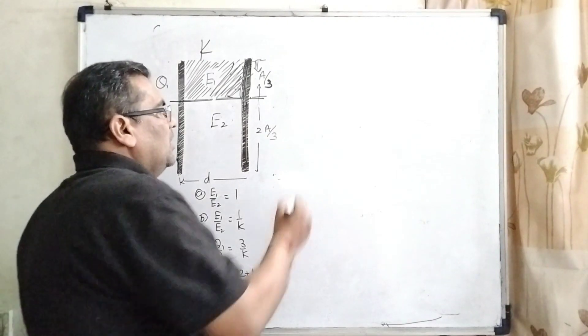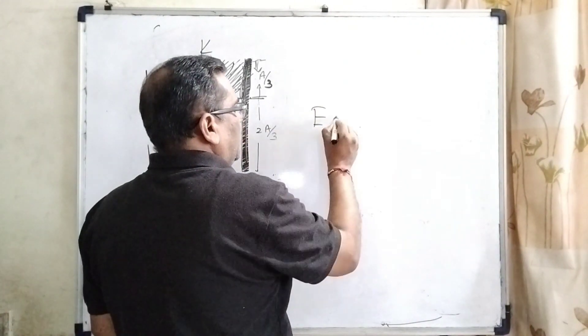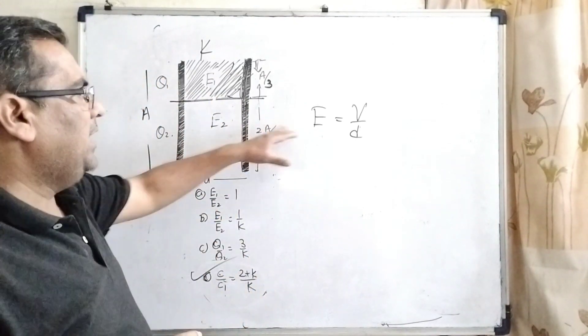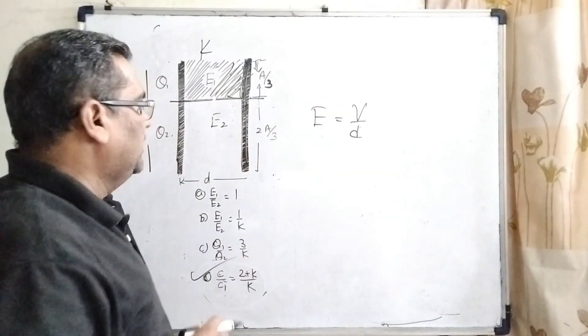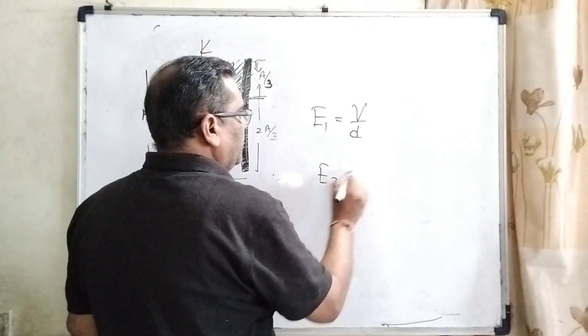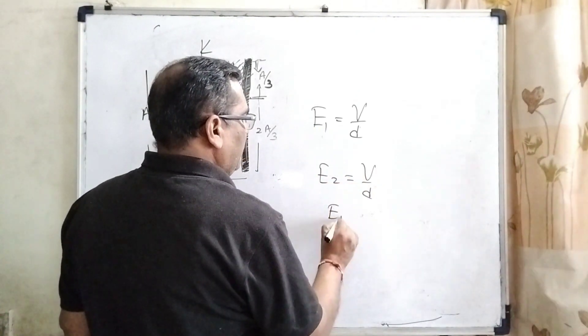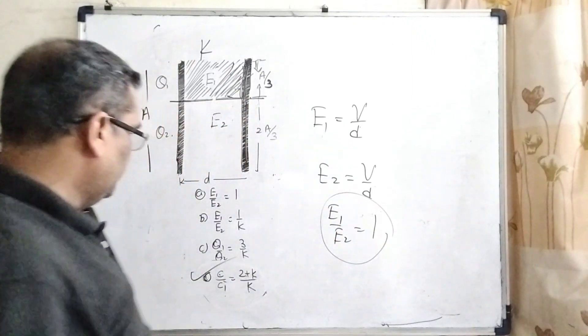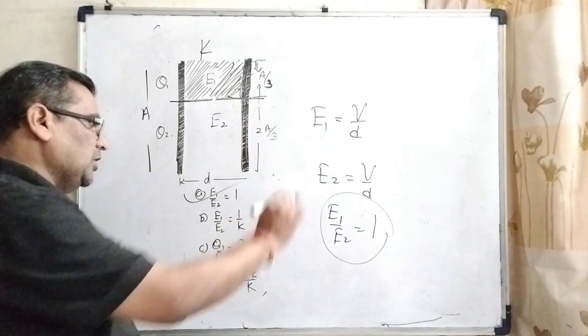As we know that electric field E equal to V by d. So therefore, dielectric medium does not affect here, and potential is the same and distance is the same for E1. And same thing, E2 equal to V by d. So E1 upon E2 is equal to 1. So now you can see that A option is also correct.